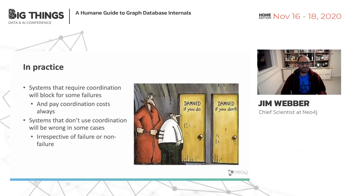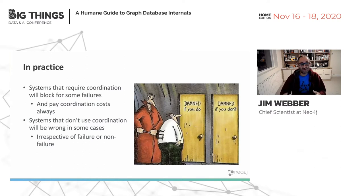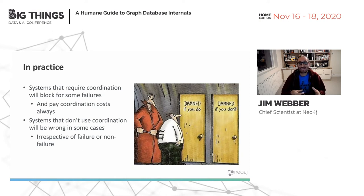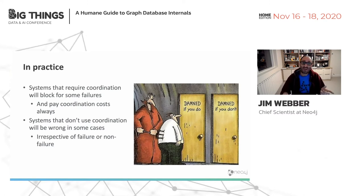You're damned if you do and damned if you don't. Systems that require coordination — those that want to be reliable — will block when enough failures occur, and you pay coordination costs all the time to keep things correct. Systems that don't use coordination — these highly scalable databases — will be wrong in some cases; they will serve you stale data irrespective of failure. We want to maximize both to some reasonably practical level. We can make availability easier by potentially losing writes or serving stale reads, but that compromises reliability. We could make reliability better by occasionally coordinating, but coordination costs reduce availability.